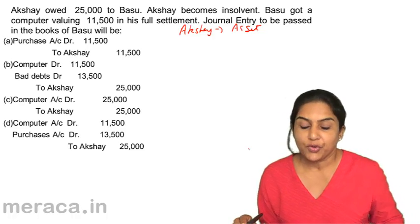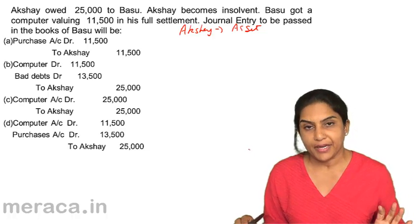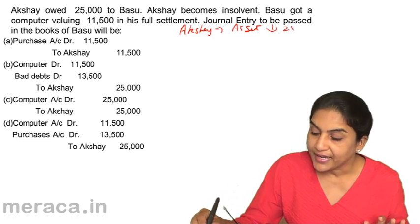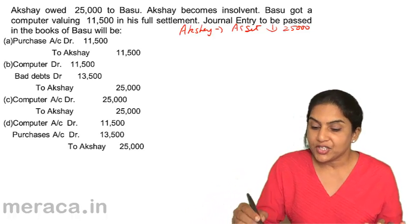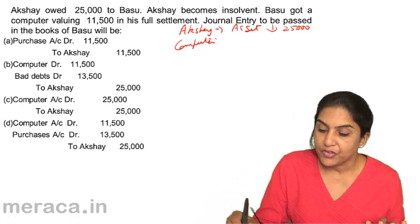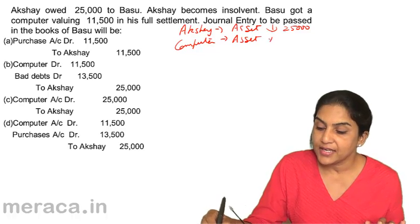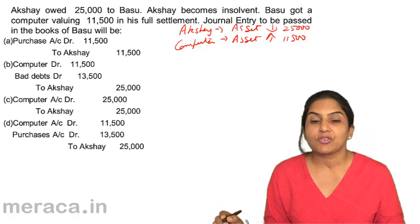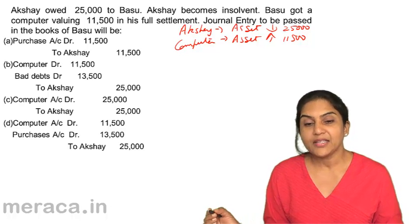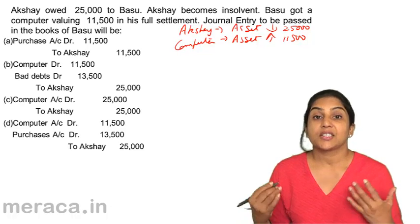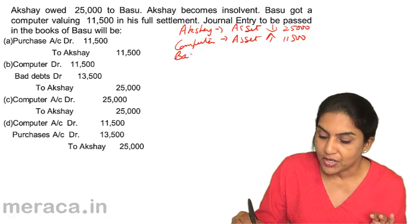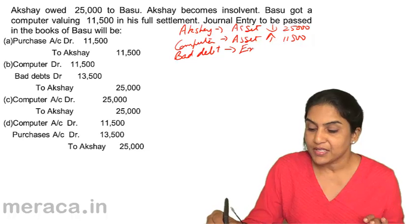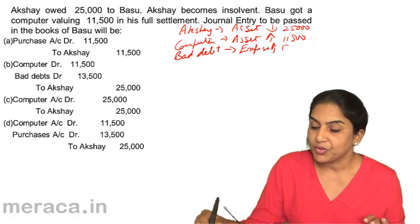Akshay gives a computer valued at 11,500 in full settlement. So, Akshay's asset receivable is going to come down by the entire 25,000. In exchange, we will get a computer, which is also an asset — increase in asset by 11,500. The balance of 13,500 is lost. It is a loss, an expense called bad debt — a loss or expense account increased by 13,500.